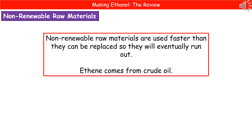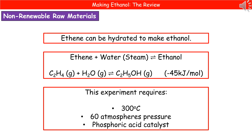We do have an alternative way to make ethanol, which uses non-renewable raw materials. They are named non-renewable because we're using them faster than they can be replaced, and as a result they will eventually run out. The example here is ethene, which comes from crude oil. Using these non-renewable raw materials, we can make ethanol through a hydration reaction. Ethene plus water in the form of steam will make ethanol. It is a reversible reaction, so we need specific conditions: 300 degrees Celsius, a pressure of 60 atmospheres, and a catalyst of phosphoric acid.